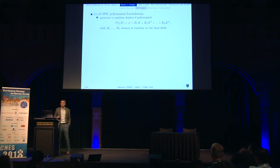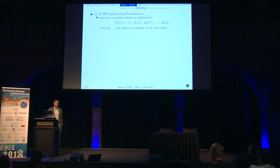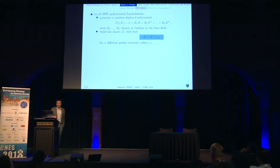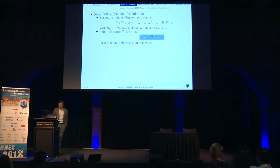Let us consider the secret sharing scheme proposed by Shamir in 1979. In this sharing, we have two parameters: the number of shares and the security order D. Essentially, this sharing consists in generating a random polynomial of degree D such that the constant term in this polynomial is Z, and all the other coefficients are chosen at random in the base field. To define the shares, you select N public points alpha_i which are distinct, and you define each share Z_i as an evaluation of the random polynomial at public point alpha_i.